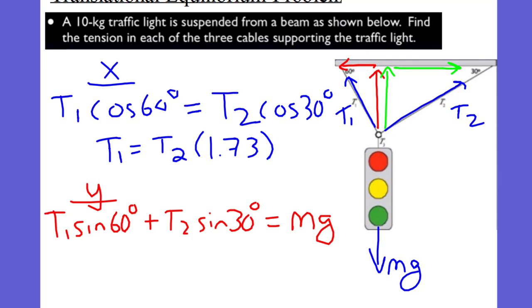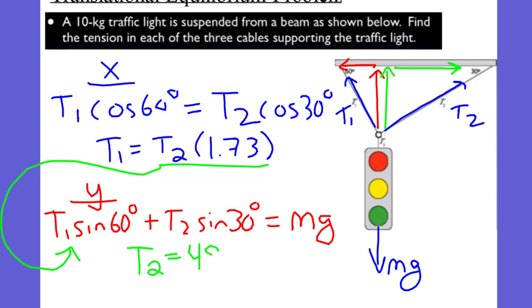We have 10 kilograms times 9.8 meters per second squared giving us our force of gravity, or weight. We know tension one equals T2 times 1.73, and therefore we can find what T2 is. T2 ends up being approximately 49 newtons, which means we can plug that back in and find out what T1 is. T1 ends up being about 84.9, almost 85 newtons. That is how we take a look at one of these translational equilibrium problems.